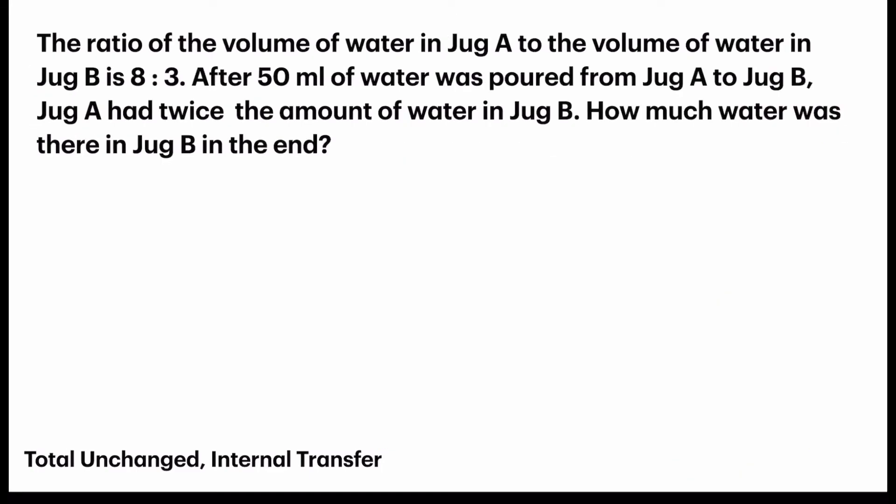This is the last question we have. The ratio of the volume of water in jug A to the volume of water in jug B is 8 to 3. After 50 milliliters of water was poured from A to B. So, immediately, again, it's internal transfer. And then, now the new ratio. Let's see. They said that jug A had twice the amount of water in jug B. But they did not give us any ratio. But how do we change that to a ratio? So, remember, twice the amount. So, if B has one unit, A will have two units. And that is our ratio.